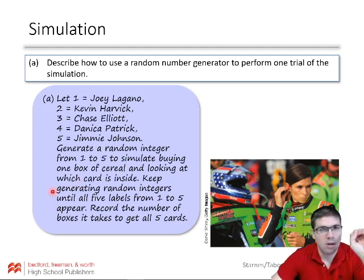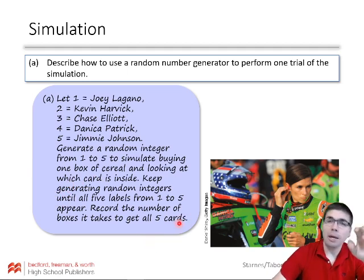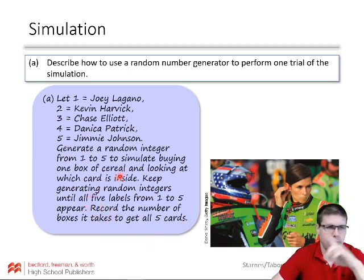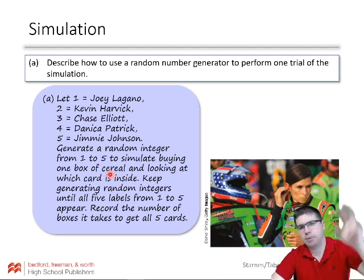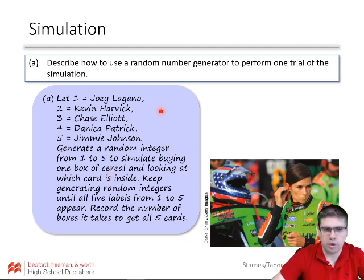So maybe you get five for five, right? All five, the first five are all different. Maybe it takes you six. Maybe you get one, two, three, three, and then you get five and then four or something like that. That took you six tries. And then maybe you get a few other repeats, and you get cards you've already had. So that's what this would simulate.